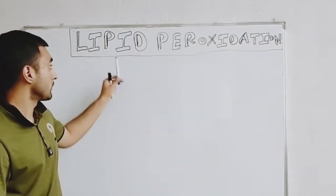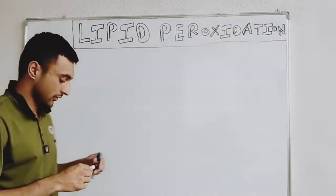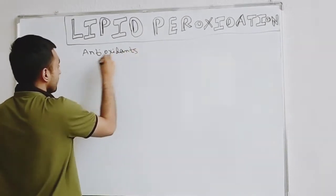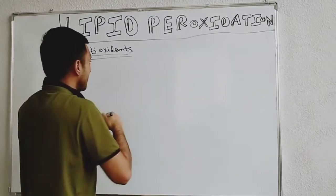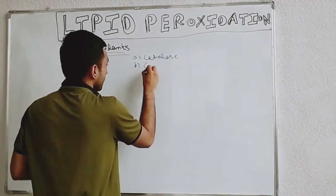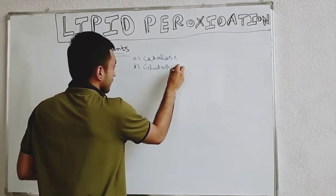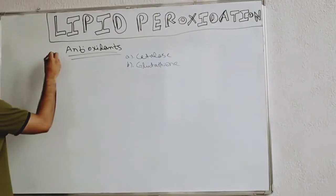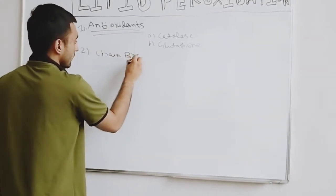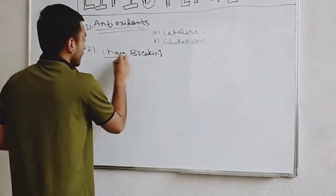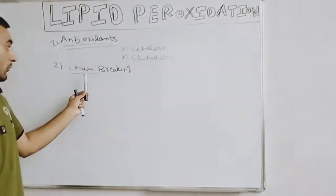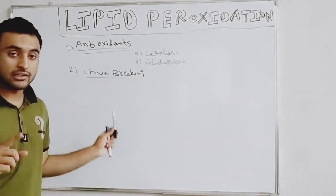Now I will tell you how to stop this lipid peroxidation process, because it can lead to harmful effects. First, we can use antioxidants — we can use catalase and glutathione. Second, after antioxidants, we have the chain-breaking process. We stop the propagation step by chain breaking, which occurs by neutralization of free radicals.